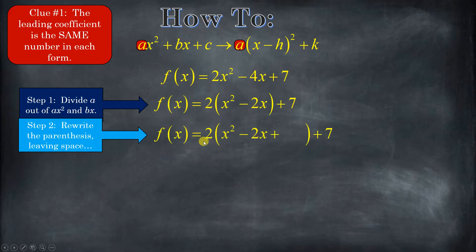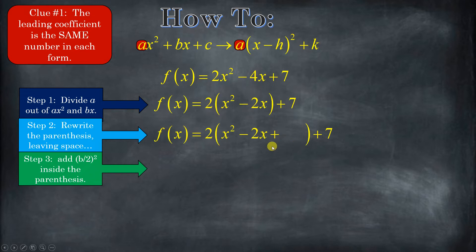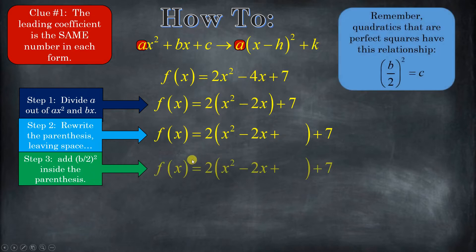Now the second thing we're going to do is rewrite it and we're going to put a plus sign after this b term and we're going to leave a space, because we have to take half of b squared and add it here — we learned that in the previous video. We want to make this a perfect square. Half of b squared is going to equal c. So we're going to take half of b and square it and add it. Half of negative 2 is negative 1, so negative 1 squared.